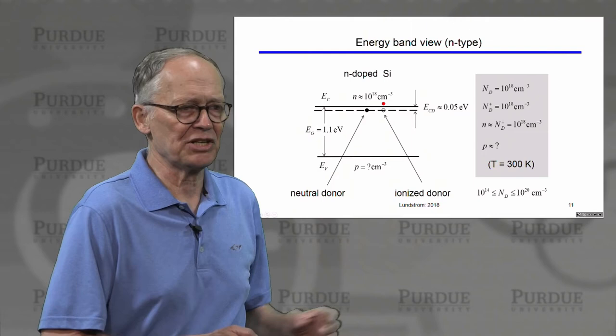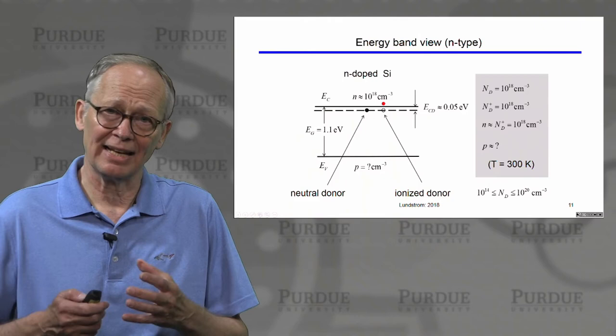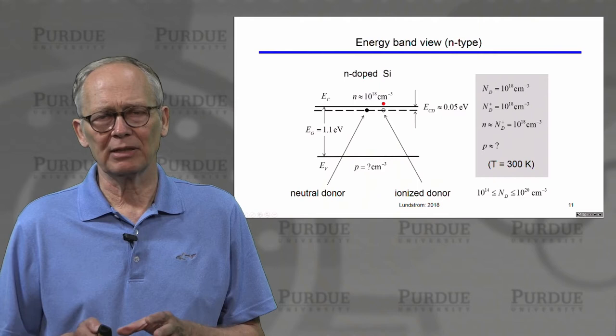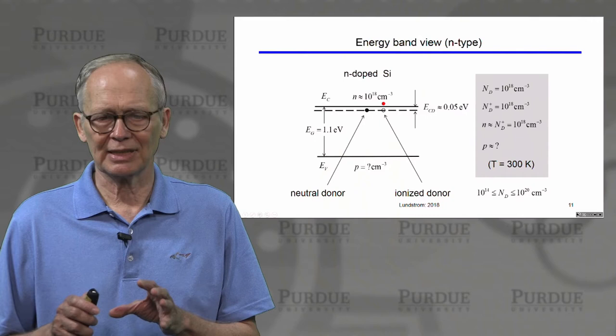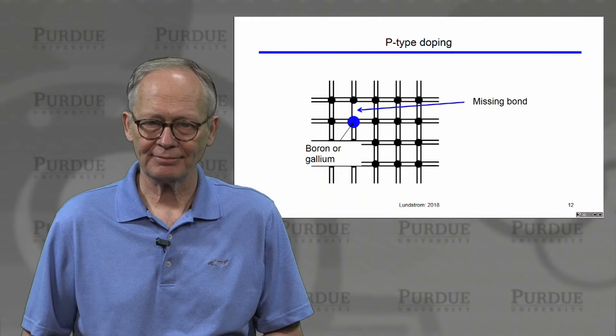Typical concentrations of dopants: a concentration of 10¹⁴ per cubic centimeter would be considered a light doping; a concentration of 10²⁰ would be considered a very heavy doping — about as heavy as we're able to dope it. There's a solid solubility limit of phosphorus or arsenic in silicon. The number of atoms per cubic centimeter is about 5×10²² — so even at maximum doping, fewer than 1% of the atoms are phosphorus or arsenic atoms.